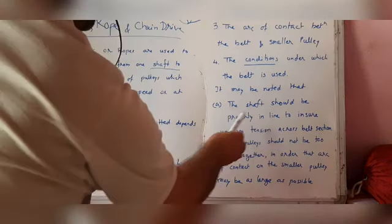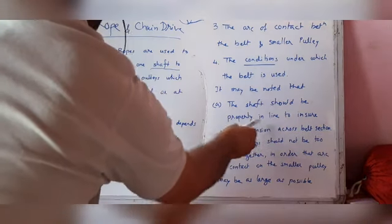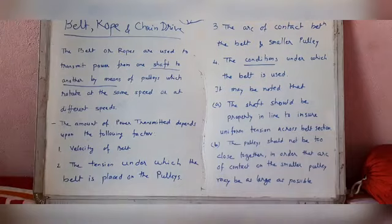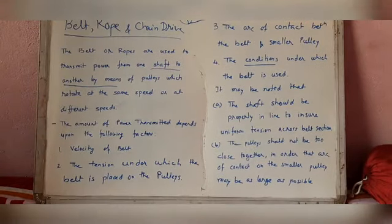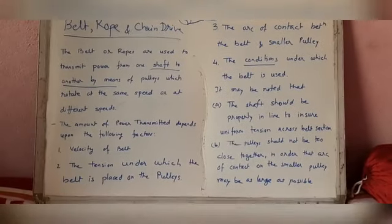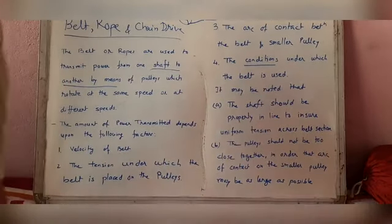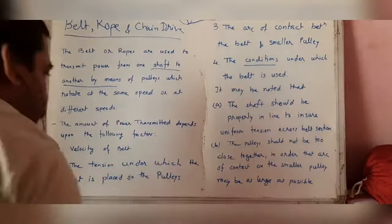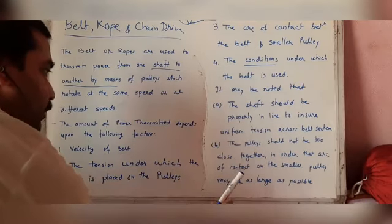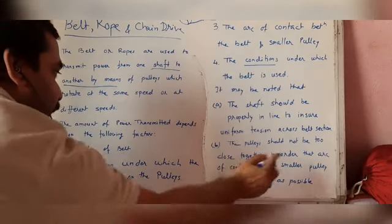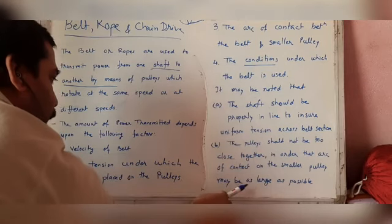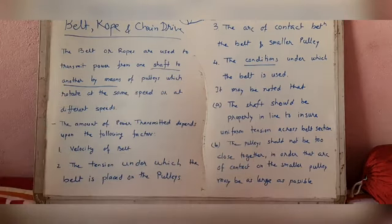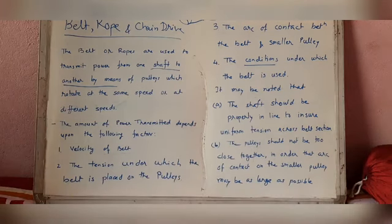First condition: the shafts should be properly in line to ensure uniform tension across the belt. Next, the pulleys should not be too close together so that the arc of contact on the smaller pulley may be as large as possible.